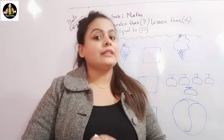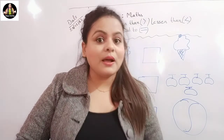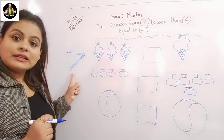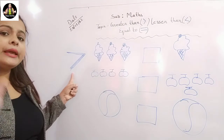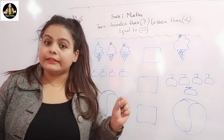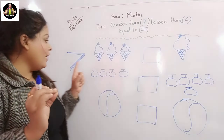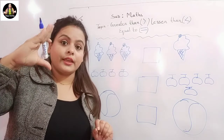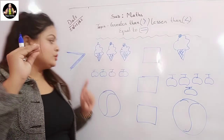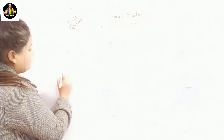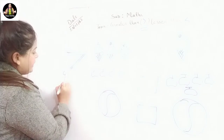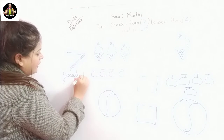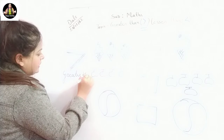Let's see when the alligator will open his mouth. Whenever the alligator sees the biggest number — jab bhi alligator ko bada number dekhta hai — he opens his mouth like this. This is the sign of greater than.